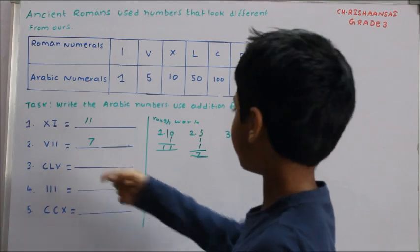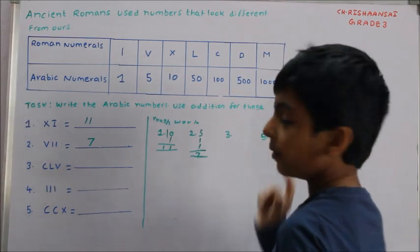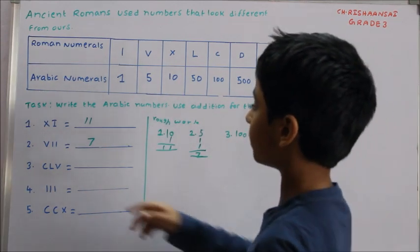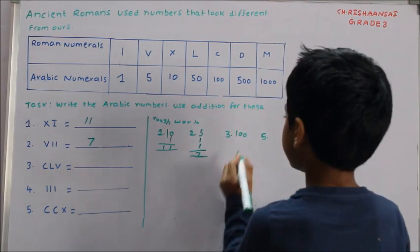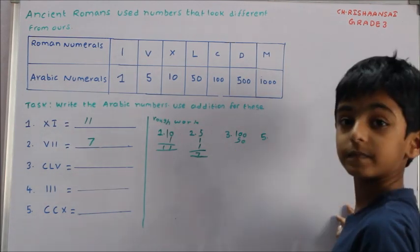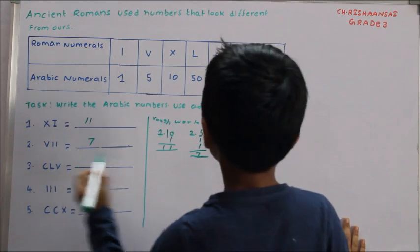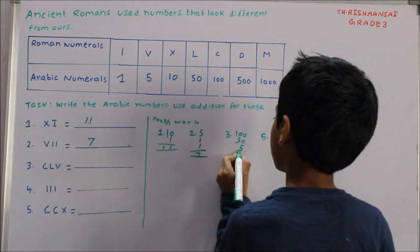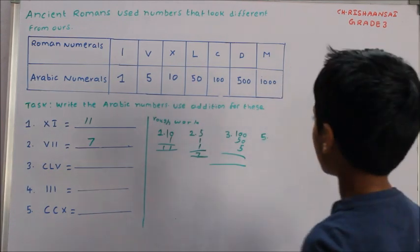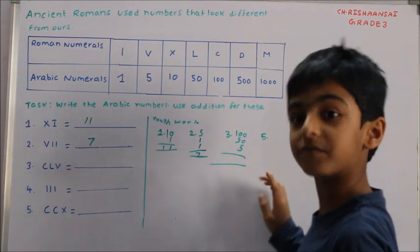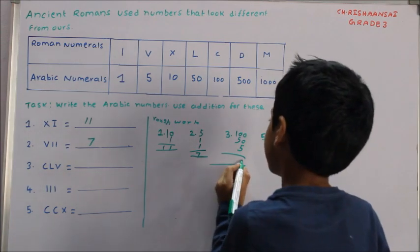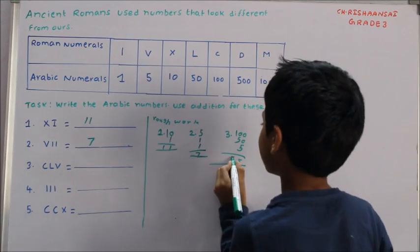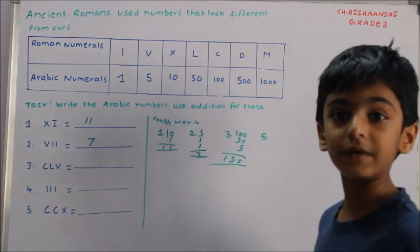CLV — C means 100, L means 50, and V means 5. Adding them: 100 plus 50 plus 5 equals 155.